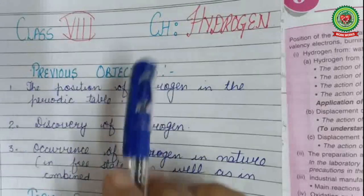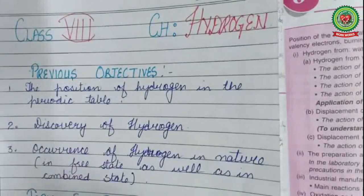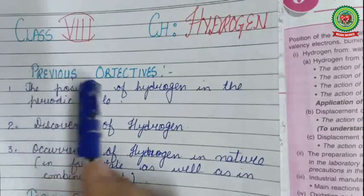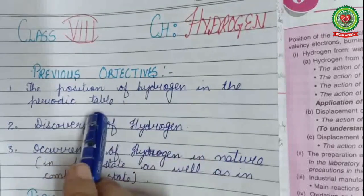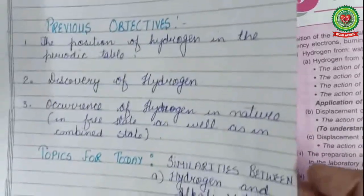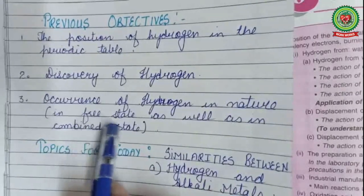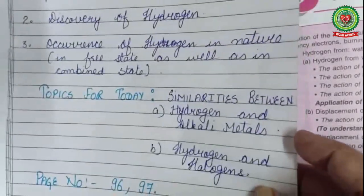Good morning students. Today's chapter is the study of the first element, hydrogen, for class 8. Before proceeding further, let's have a quick glance at our previous objectives from the previous video: the position of hydrogen in the periodic table, the discovery of hydrogen, and the occurrence of hydrogen in nature — both in free state and in combined state.